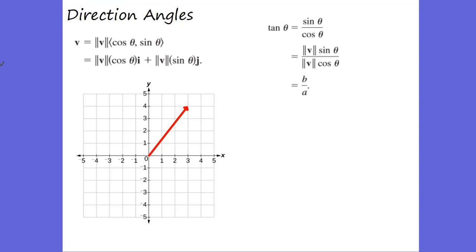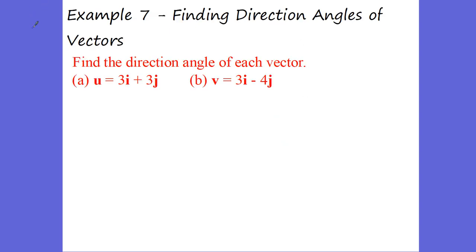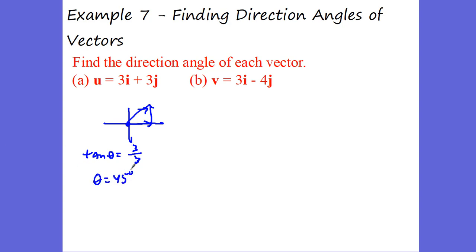We've already talked about how to find the magnitude — we use the Pythagorean theorem. We take a look in the X direction and the Y direction: 3² + 4² = 5², so the magnitude would be 5. How do we find the angle? We put the Y value over the X value — that equals tangent of theta. We do arc tangent to find the angle. For example, with 3 in i and 3 in j — we're in the first quadrant — tangent of theta equals 3 over 3, so arc tangent of 1 is 45 degrees.